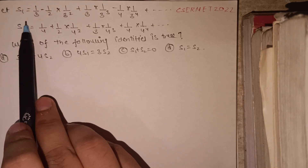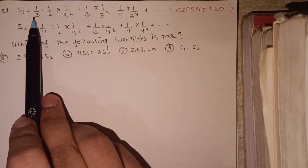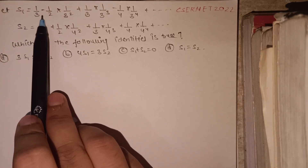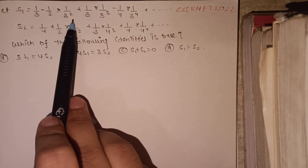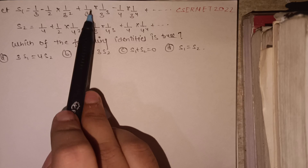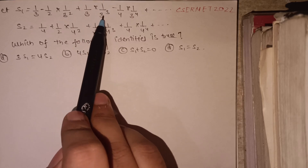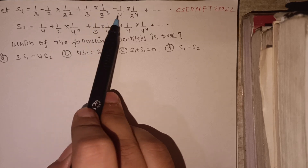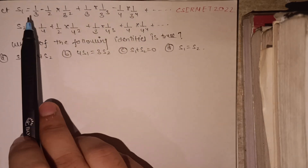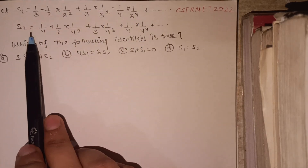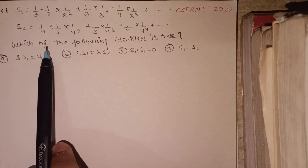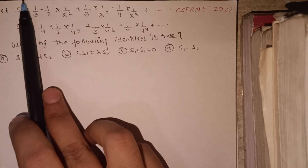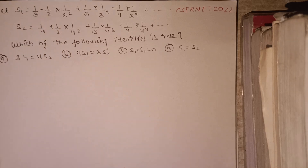Our question is: let S1 equal 1/3 minus 1/2 times (1/3)² plus 1/3 and so on. This is one series, and S2 is another series. We have to find the relation between these two series.